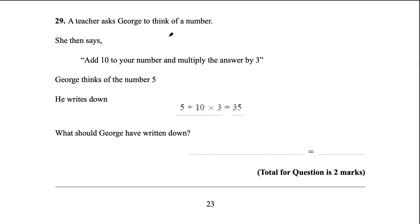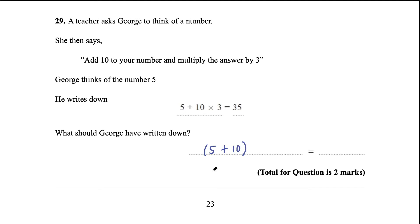Question 29: A teacher tells George to add 10 to his number then multiply the answer by 3. George thinks of 5 and writes 5 + 10 × 3 = 35, but this is wrong due to order of operations — multiplication is done first. What George should have written is (5 + 10) × 3 = 15 × 3 = 45, using brackets to ensure the addition is done first.